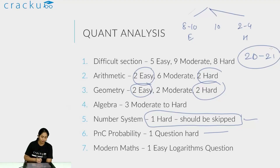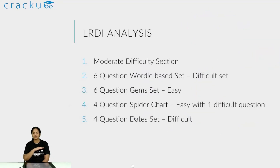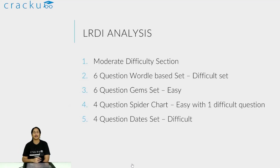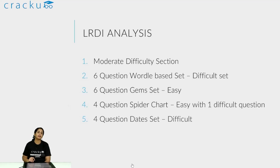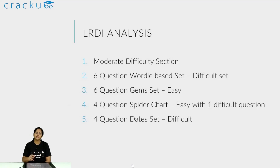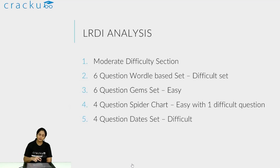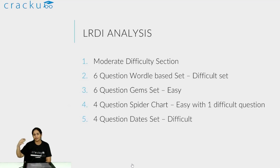That is what I have to say about the quant section. Let us take a look at the LRDI section. I felt this was more difficult — in fact, this is exactly what I expect CAT to have, where there will be two six-question sets. One six-question set will be difficult and one will be easy, but looking at the set from a distance, you won't know which is which. Which six-question set you choose determines how well your mock goes — if you choose the harder set, your attempt is miserable; if you choose the easier one, your attempt is very good.